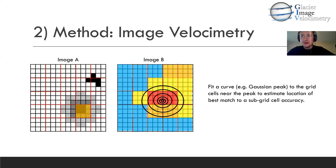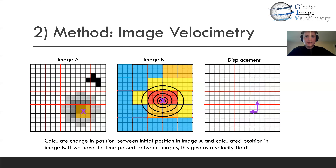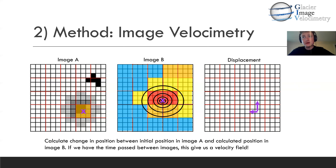We can then fit a curve — for example, a Gaussian peak — to the grid of cells near the peak to estimate the location of the best match with sub-pixel accuracy, which provides a major improvement. We identify the center of that sub-pixel peak and calculate the x and y components of that displacement — the difference in position between the old and new position of the pattern. If we know the resolution of the image and the time between the two images, we have a velocity, which is exactly what we need for glaciers.